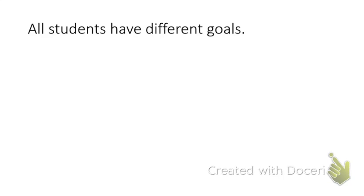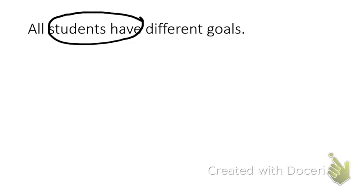Here is our first sentence: All students have different goals. Before we can diagram it, we need to know what kind of structure we're working with. We need to look for the subject-verb combinations. In this case, we only have one subject-verb combination: students have. We have one independent clause, which makes it a simple sentence.